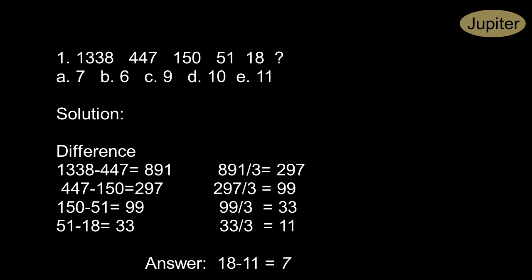1338 minus 447 is equal to 891. 447 minus 150 is equal to 297. 150 minus 51 is equal to 99. 51 minus 18 is equal to 33.